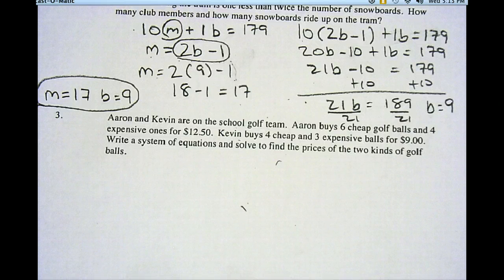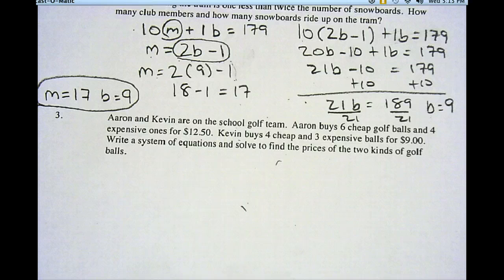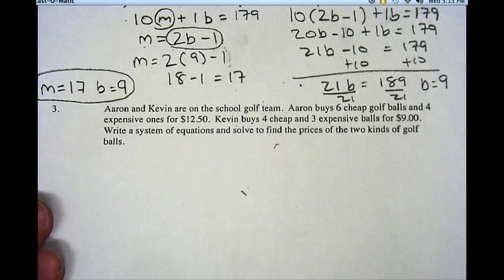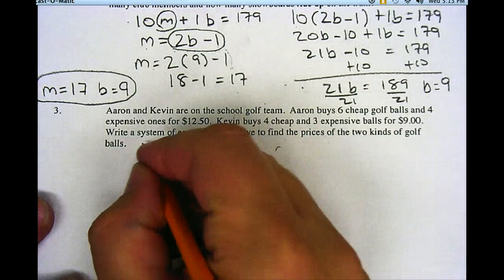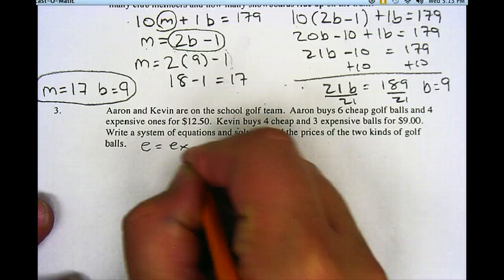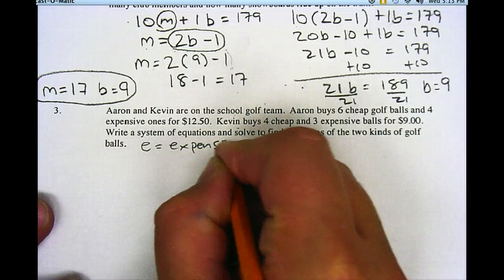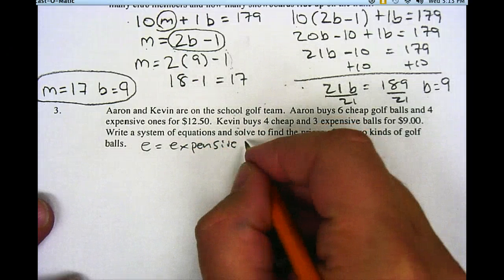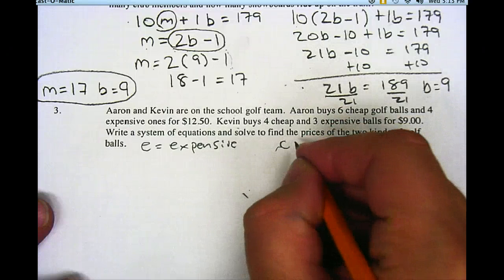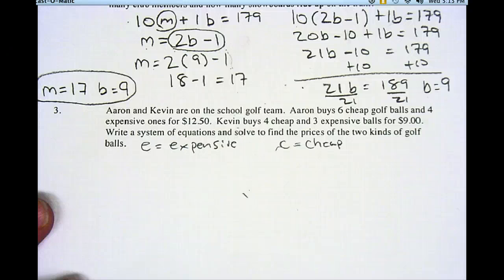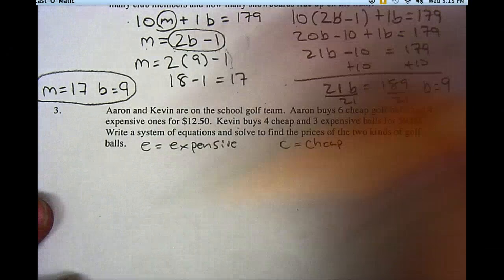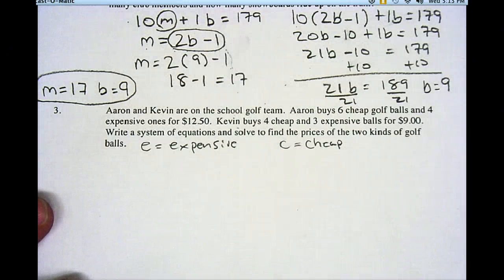So again, whenever I have a system of equations and whenever I'm writing equations, I've got to define the variables. So my two variables in this problem are going to be expensive golf balls and inexpensive golf balls. So I'm going to let E equal expensive golf balls, and C is just going to be cheap golf balls. So those are my two variables right there that I've defined.